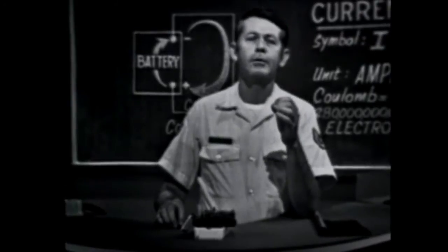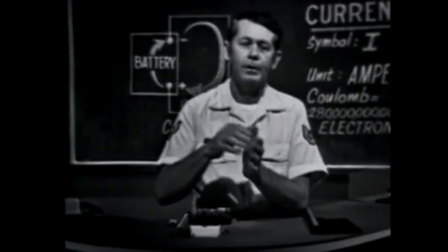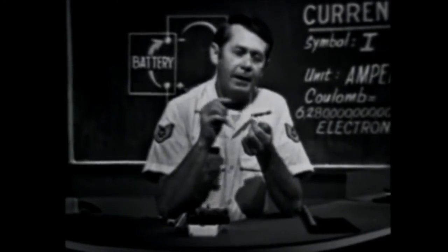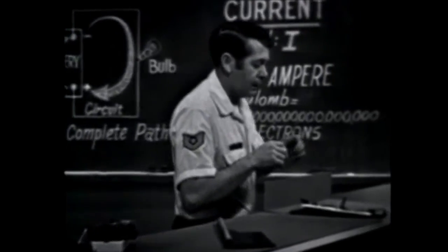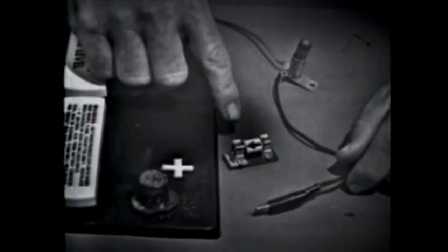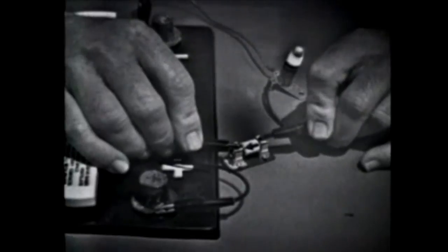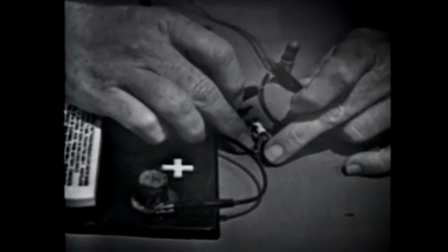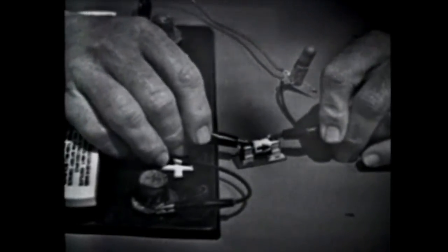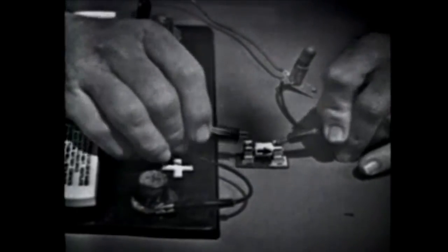There are a few more facts about current we should know. What is the direction of current with respect to the voltage source? We said electrons move from negative to positive, but what difference does it make? Let me show you the importance of knowing how current flows. Some devices will operate only when current is flowing in the proper direction. This semiconductor diode is such a device. If I apply current to the device in the proper direction, the bulb lights. If I turn the diode around and try to make current flow in the wrong direction, nothing happens. So to make this diode work, we would have to know the direction of current flow.